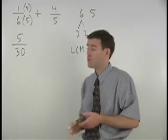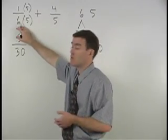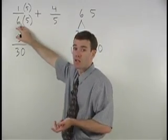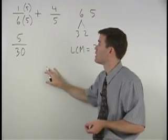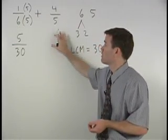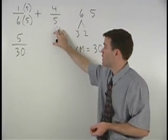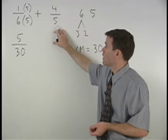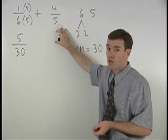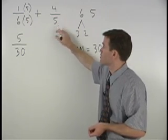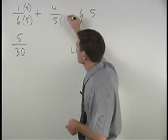Notice that five over 30 has the same value as one over six. For our second fraction, we have a five in the denominator, and we want a common denominator of 30. So we must multiply this five by six.